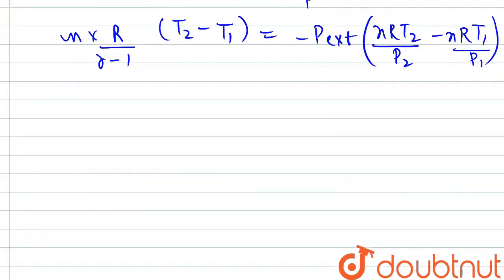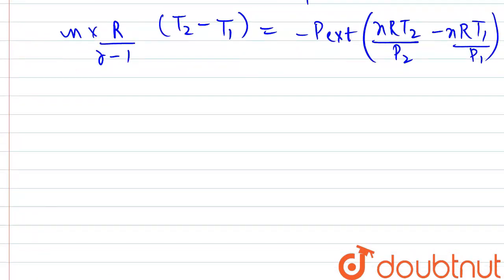Now in here we will be putting the value. This can further be written as nR divided by gamma. We have substituted 1.33 minus 1.